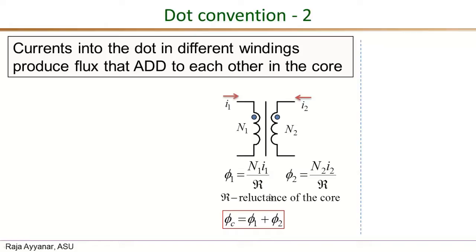The magnitude of each flux is given by mmf divided by the reluctance of the core. The mmf for the first winding is N₁I₁, and the reluctance is the same for all windings. Φ₂ will be its own secondary mmf, which is N₂I₂ over the same reluctance. The key point is that these two fluxes add in any part of the core, as long as both currents are entering the dot.